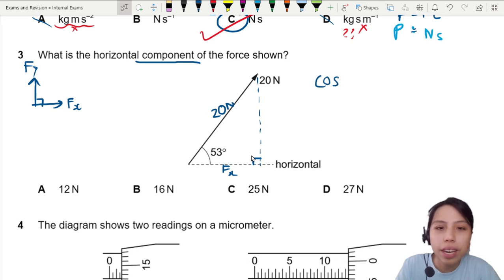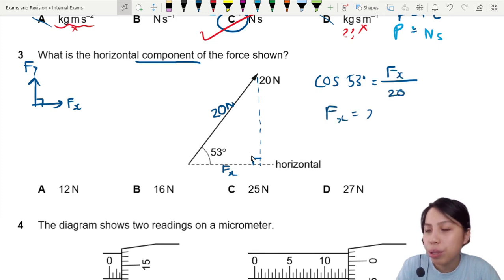Cosine! Cosine of 53. Adjacent hypotenuse. So your Fx will be 20 cos 53. Yay, press calculator.